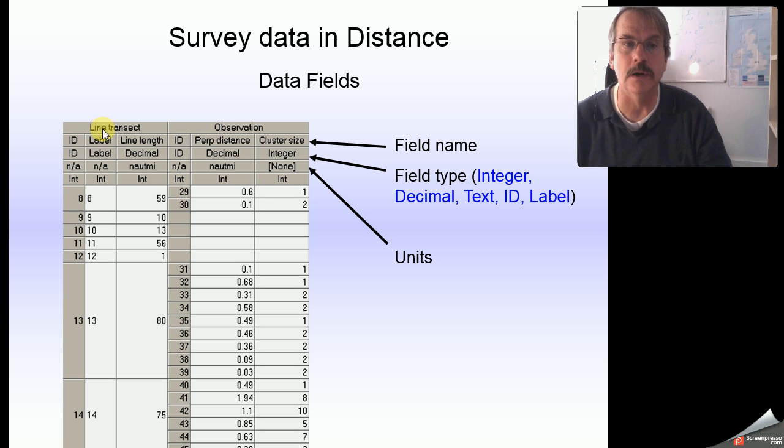Each one of those layers has a possible number of fields. Each of those fields have names, types, and units of measure. All of that information you will provide to distance when you use something called the data import wizard that I'll show you in a moment.